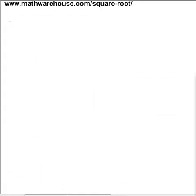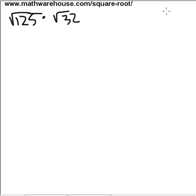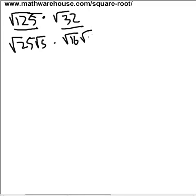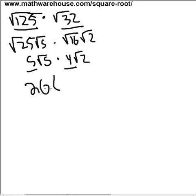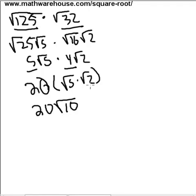Let's try the square root of 125 times the square root of 32 using our method. The first thing to ask is: can you simplify either of the original radicals? You can. Once you've simplified them, remember multiplication is commutative, so multiply the coefficients and multiply the radicals — square root of 5 times square root of 2. You end up with 20 times the square root of 10, and the last thing to check is that this final radical is simplified — and it is.